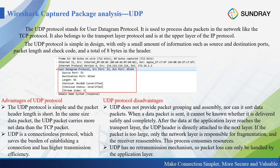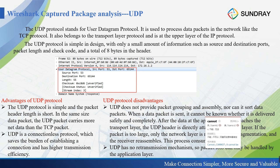UDP is a much simpler protocol than TCP, with only an 8-byte header. It is not a reliable connection, but the advantage is that because the header is very small, it can carry more data and improve transmission efficiency. The disadvantage is that UDP cannot check whether packets are fully received — if a packet is lost, only the upper application layer can identify which packet is missing.